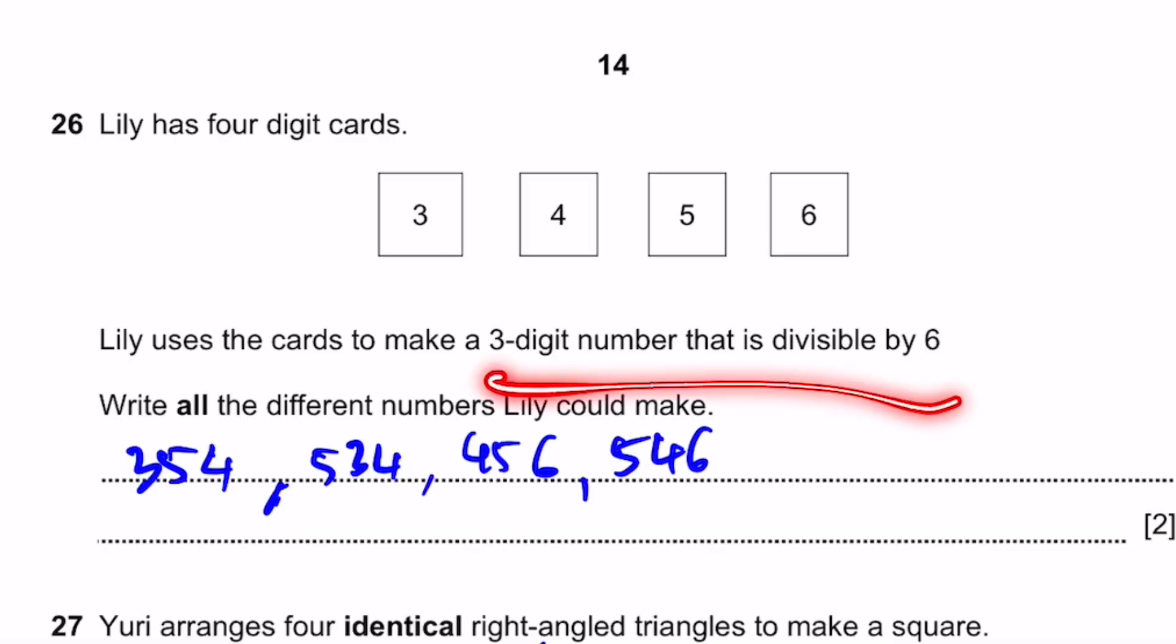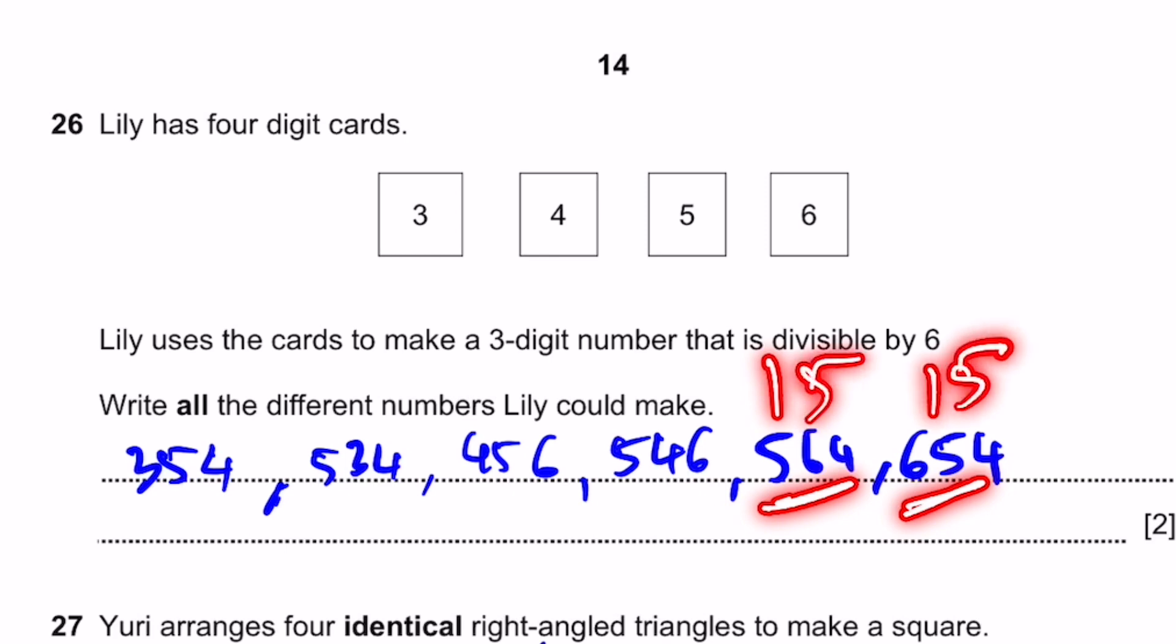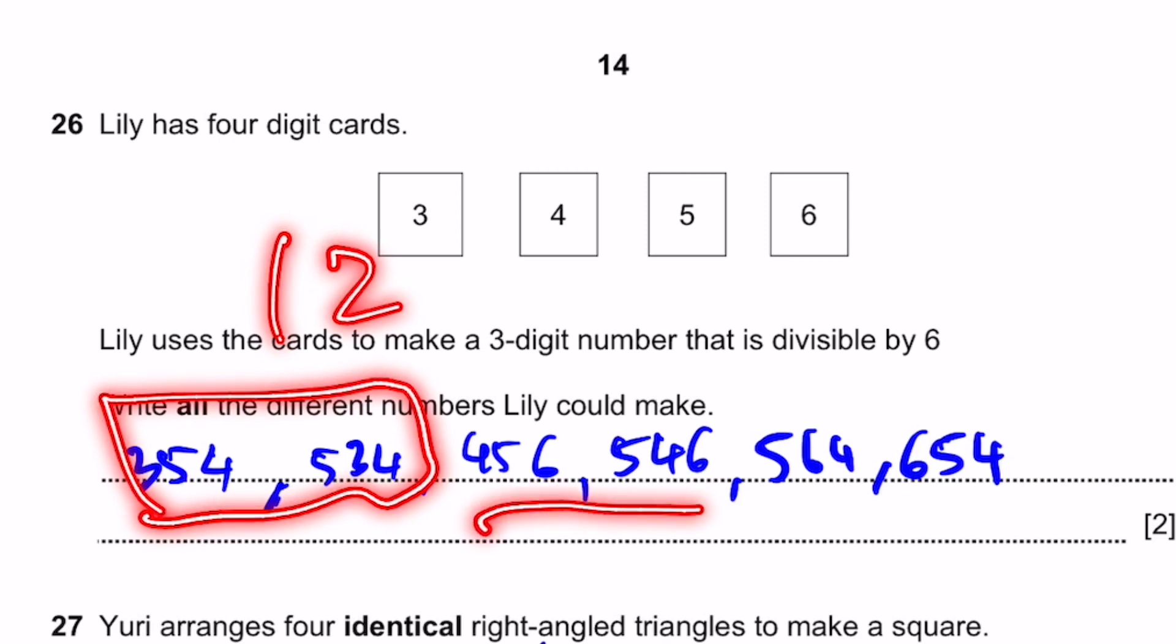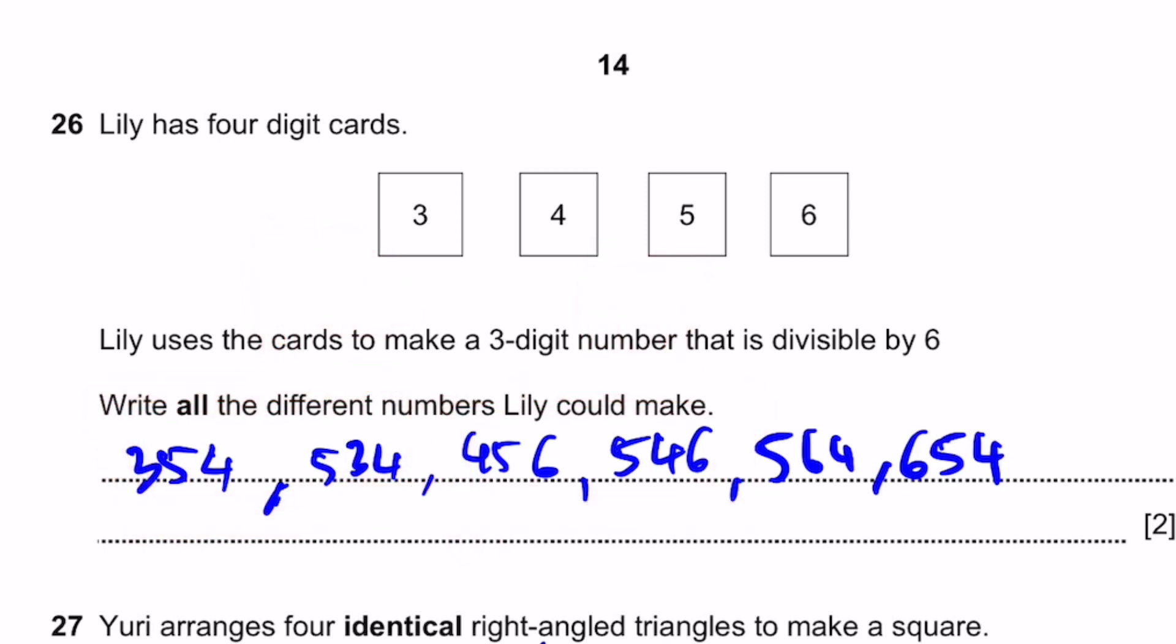There are two more options which satisfy these conditions, and they are 564 and 654. So these two numbers have digits that add up to 15. And since 15 is divisible by 3, or 15 by 3 is 5, which is an integer, we can say that this whole thing is divisible by 3. And since both are even numbers, they end in a 4, so they are divisible by both 2 and 3, therefore divisible by 6. And yes, they are 3-digit numbers. Therefore these two also count in all the numbers. These two have digits that add up to 12, and these two also have digits that add up to 15. So they are also divisible by 6 since they are all even numbers. Therefore these are only answers. You have to write all of these to get the two marks.